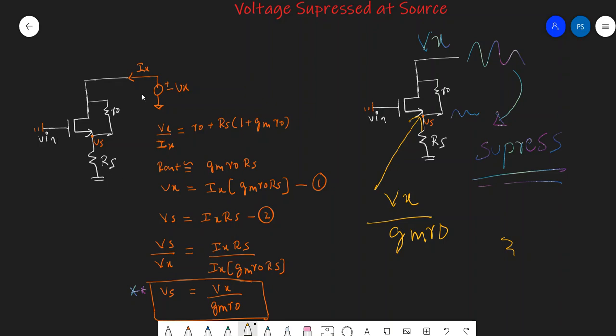We will see if V_x changes by some amount, how much of that change will appear at the source. You can think of it like this: if there is any disturbance at the drain voltage, how much of that will come at the source voltage. For that we simply have to find out what is V_s, the source voltage, in terms of V_x.